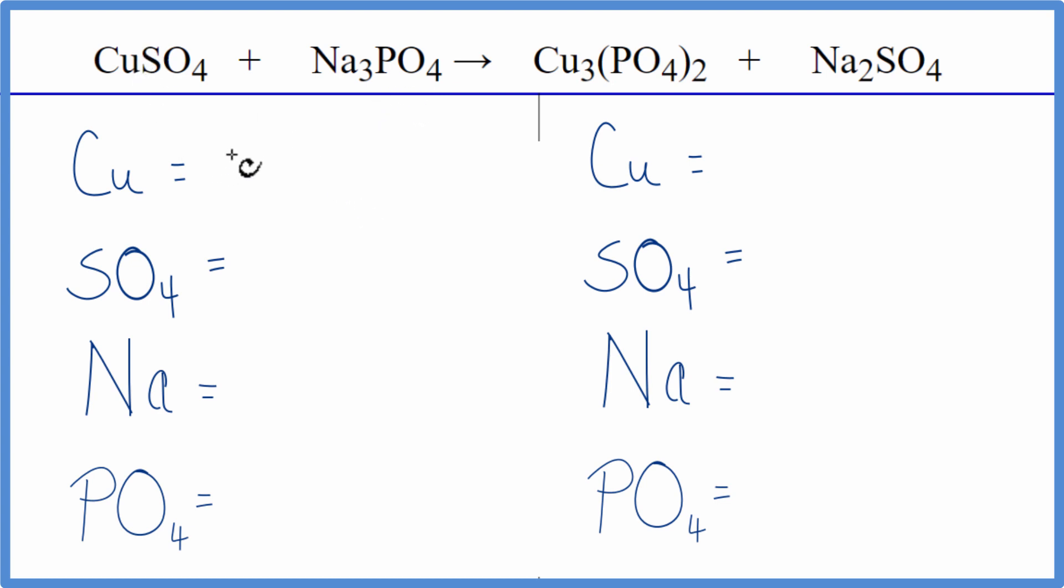We have one copper, and then this SO4, it stays together. We have it here, and we have it over here. So we're just going to count that as one thing. And this is a trick you can use with double displacement reactions. Makes them a lot easier when you have these polyatomic ions. We have three sodiums, and then one phosphate. We have the phosphate here, and then again on this side.